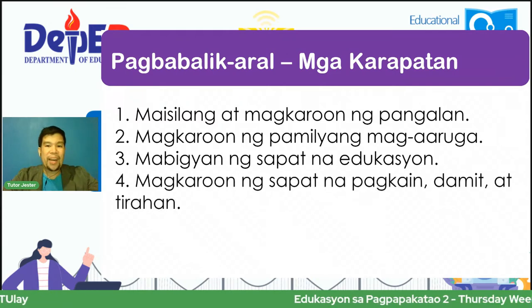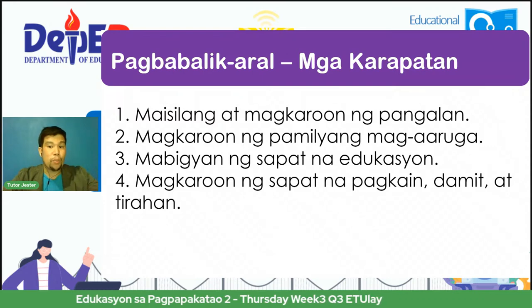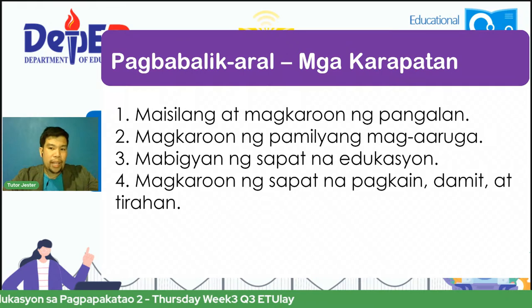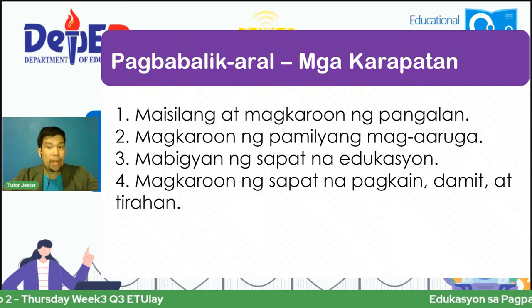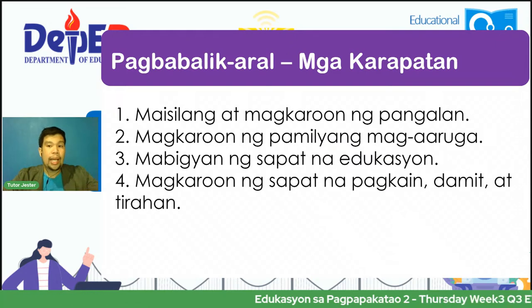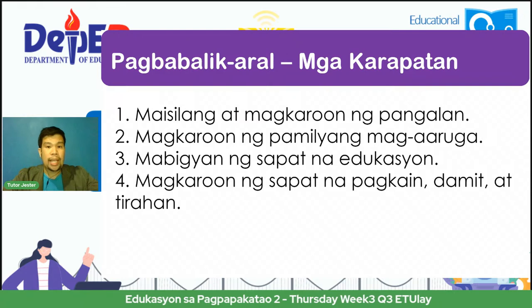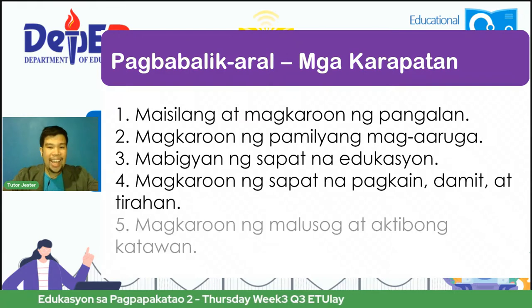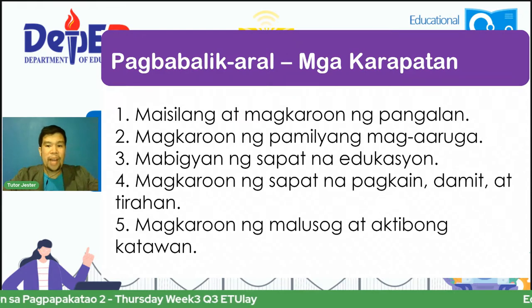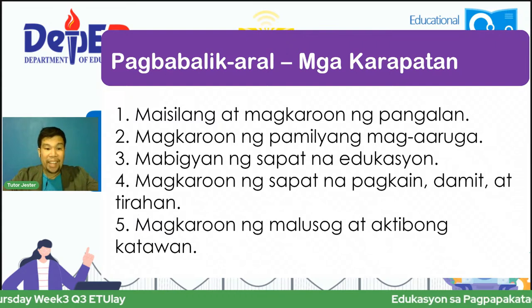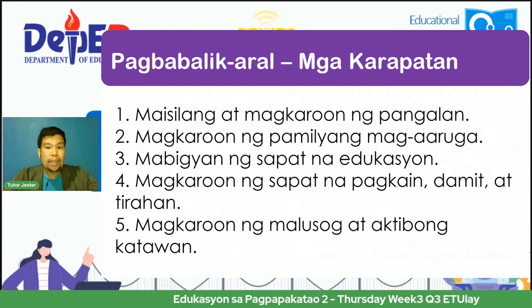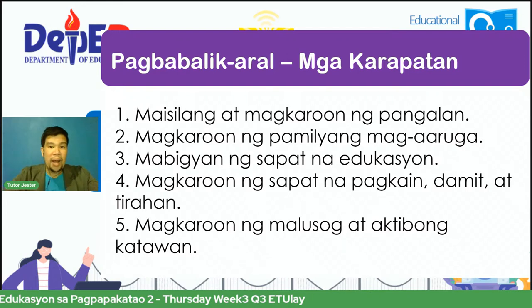Number four, magkaroon ng sapat na pagkain, damit, at siyempre ang ating tirahan. Bukod sa pagkakaroon natin ng pamilya na nag-aaruga sa atin at edukasyon, siyempre dapat meron tayong sapat na pagkain — yan ang isa pa nating karapatan na dapat nating matamasa. Number five, magkaroon ng malusog at aktibong pangangatawan. Kayo ba ay malusog? Siyempre, dahil sa pagmamahal at pagbibigay ng sapat na pagkain sa atin ng ating mga magulang.